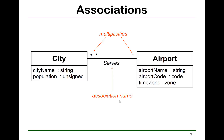We use association to model the relationship among classes. For example, airport serves cities. We draw a line between two classes to represent an association. Note that there is no line below the association name.